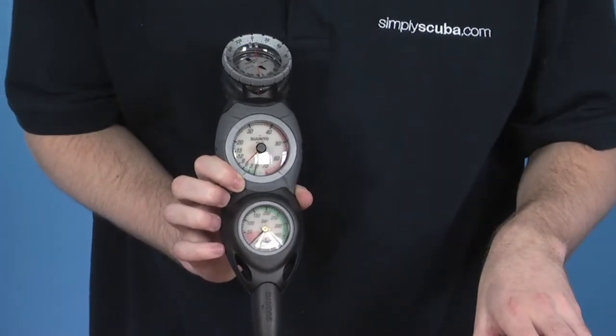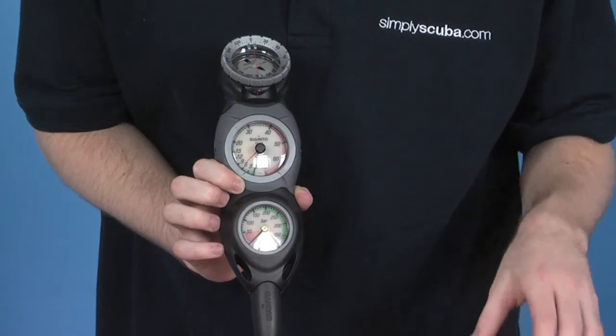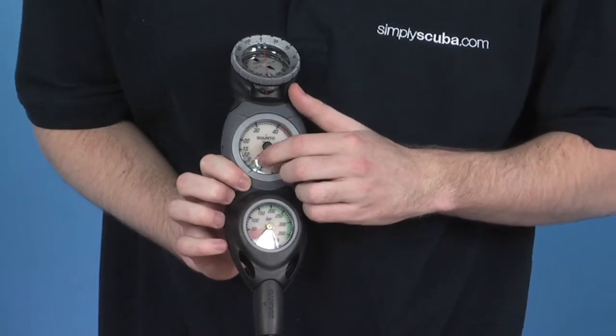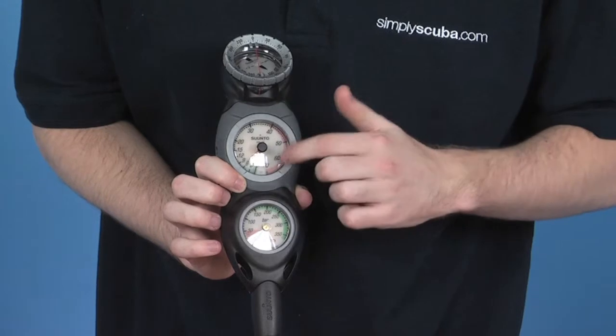In the middle, you have the depth gauge running from 0 to 70 meters. It runs from 0, 3, 6, and 9 all the way around to 70 on the other side.